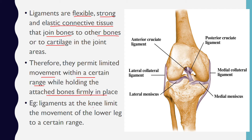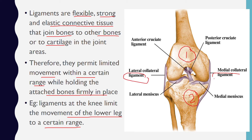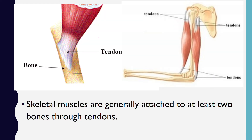For example, ligaments at the knee limit the movement of the lower leg to a certain range. You can see here that these two structures are bones, and you can see how the bones are held firmly together by the structure known as the ligament.